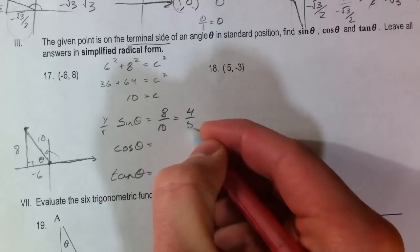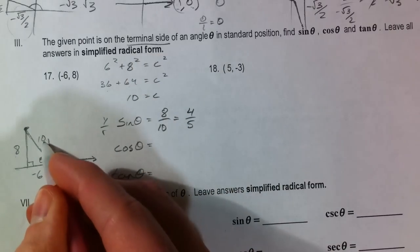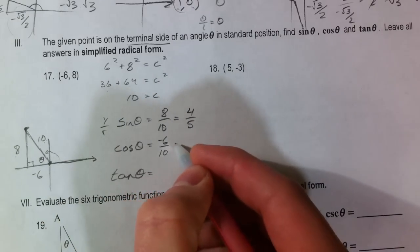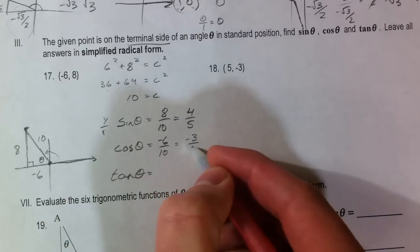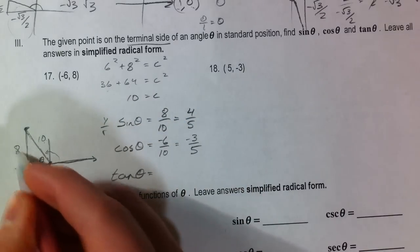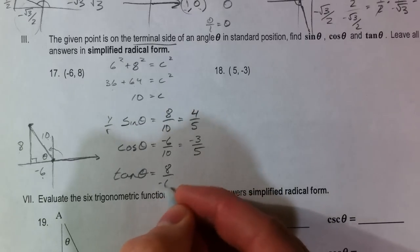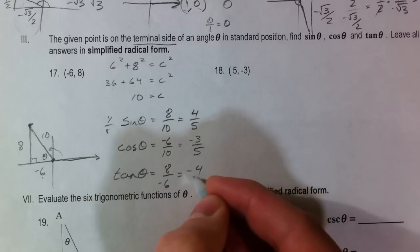Which reduces to 4 fifths. Cosine, adjacent over hypotenuse. Negative 6 over 10, or negative 3 fifths. And tangent, opposite over adjacent. 8 over negative 6, or negative 4 thirds.